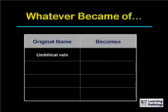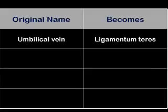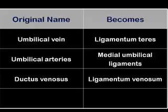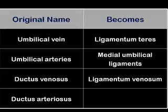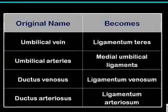This grid helps you remember the names of the original fetal arteries and veins and what they become in adult life. The umbilical vein becomes the ligamentum teres. The umbilical arteries become the medial umbilical ligaments. The ductus venosus becomes the ligamentum venosum, and the ductus arteriosus becomes the ligamentum arteriosum.